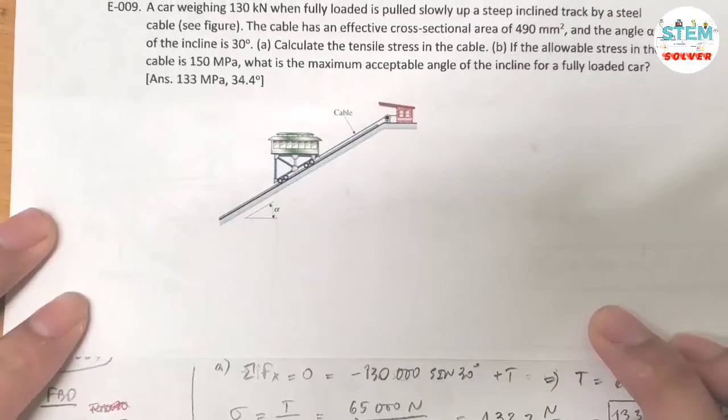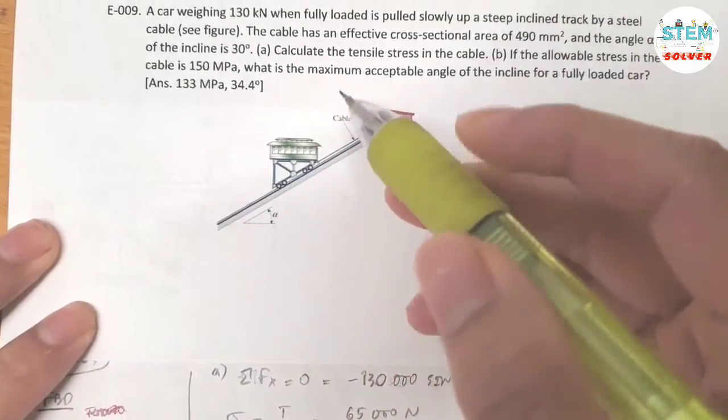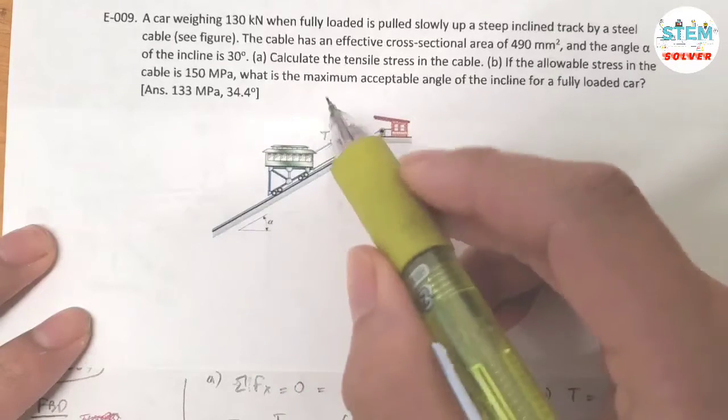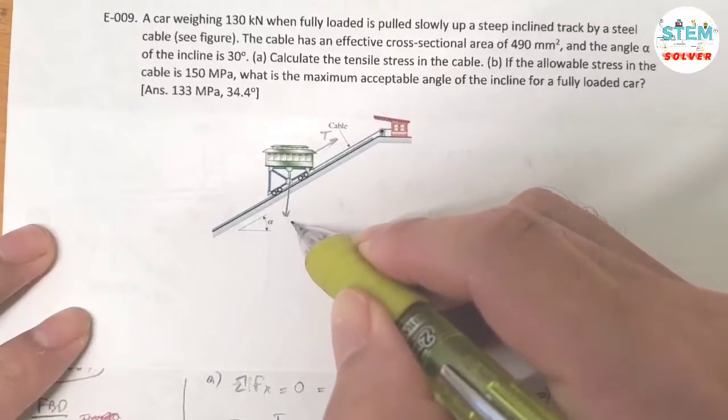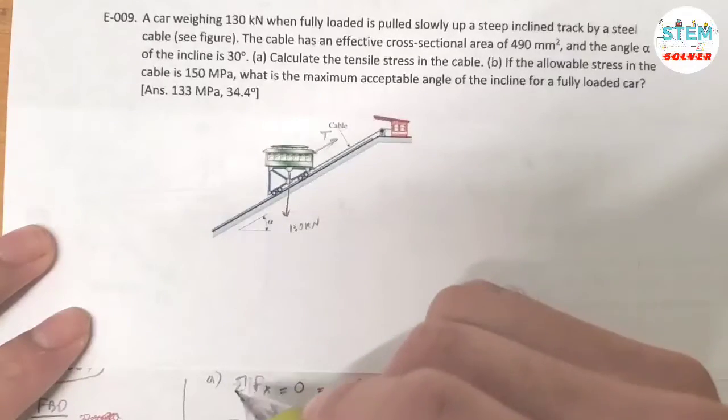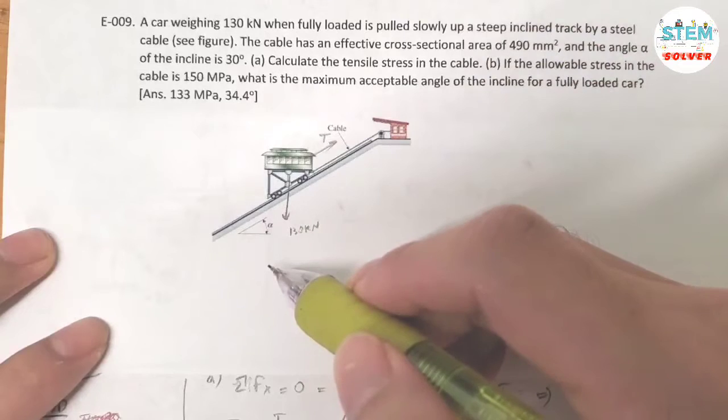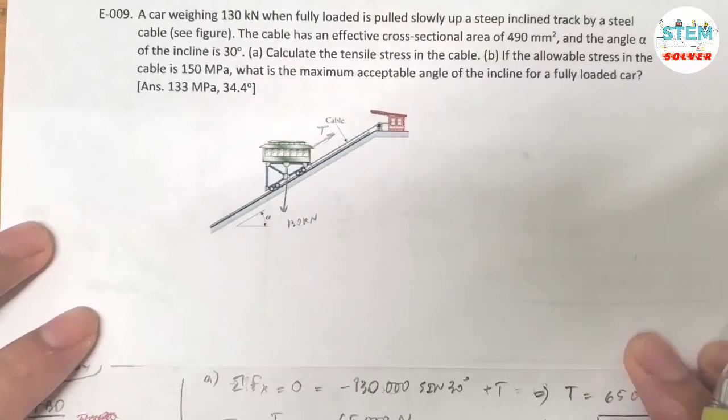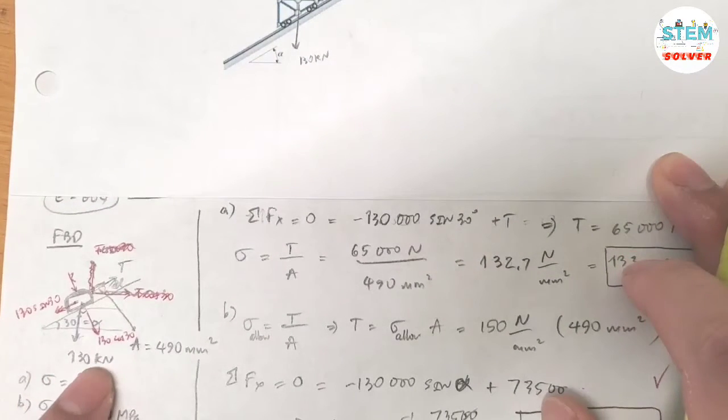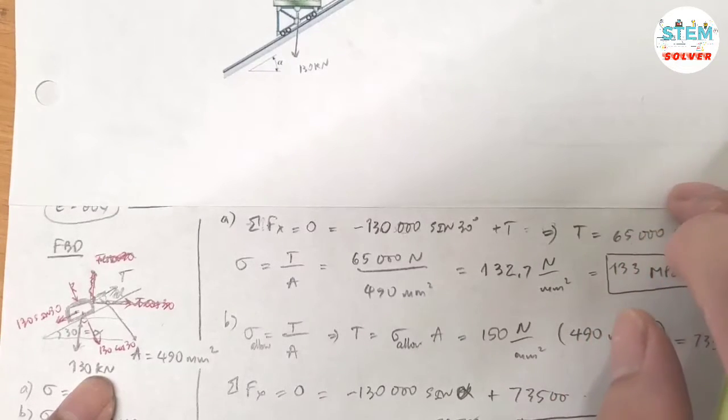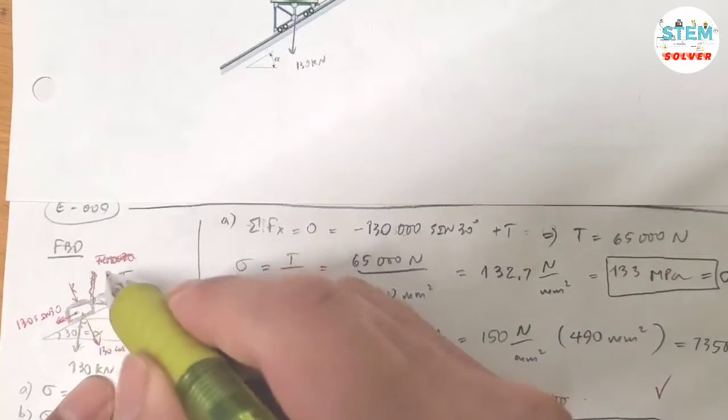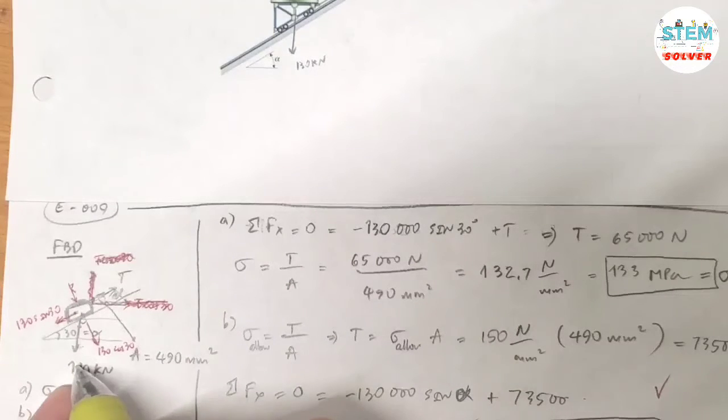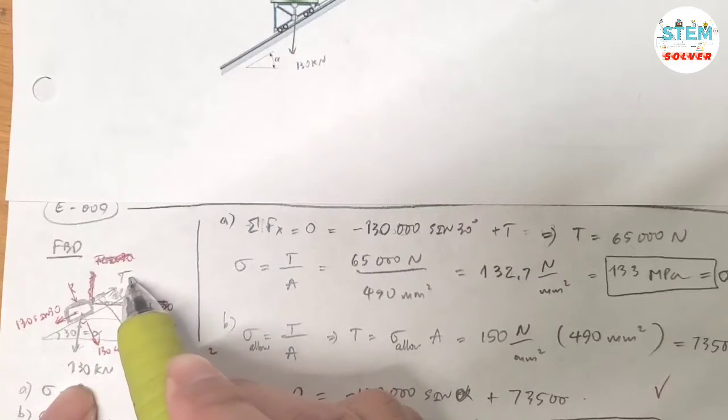Let's draw a free body diagram. As they stated, this is pulling up the cable, pulling this up, so I call it T. And this has weight of 130 kN. The angle is alpha. So I also have a free body diagram drawn down here but it's a little bit messy and confusing, so ignore this one.